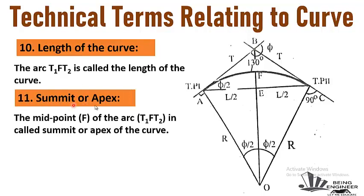The eleventh term is summit or apex. The midpoint F of the arc T1FT2 is called the summit or apex of the curve. As you can see, point F is the midpoint of the length of the curve. This midpoint of the length of the curve is called the summit or apex and it is represented by F.